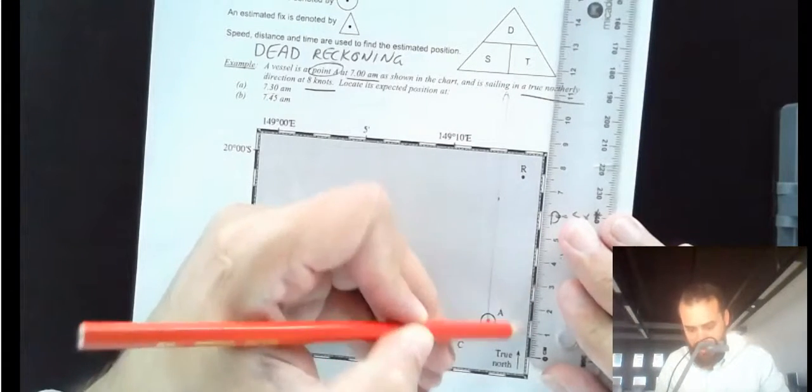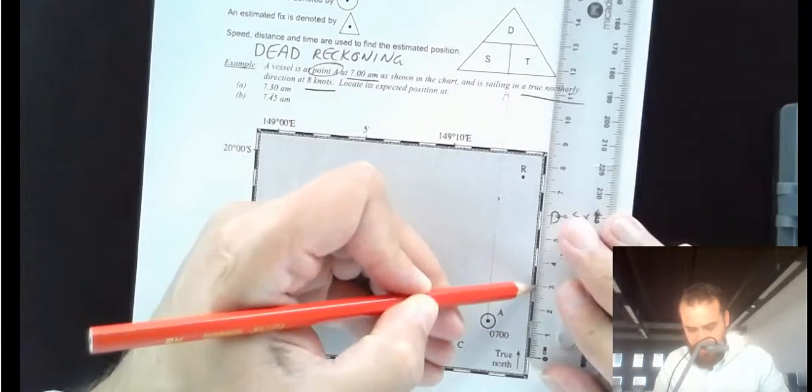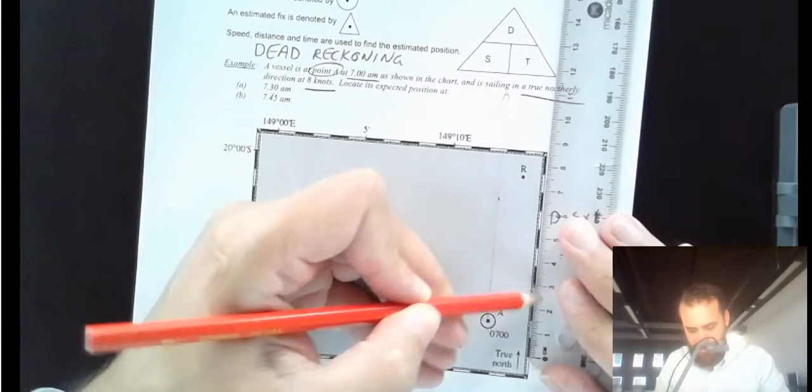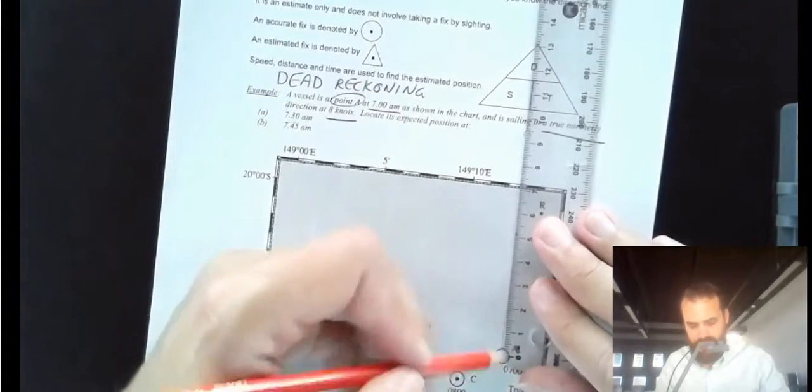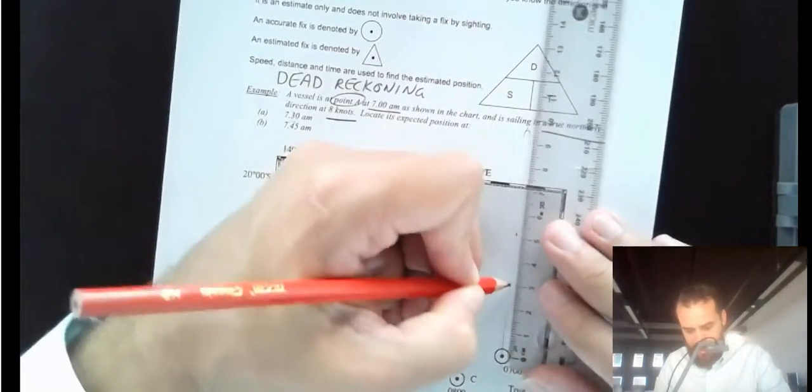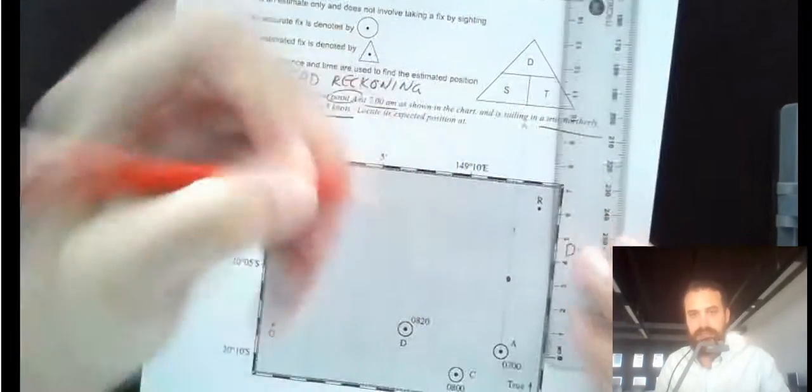So then go into the middle of that circle, measure up 3 centimeters, and there's where we expect him to be at 7:30.